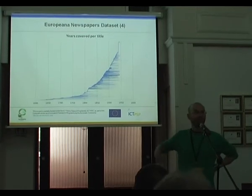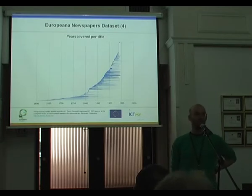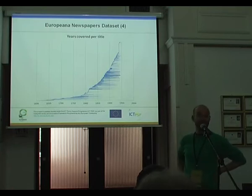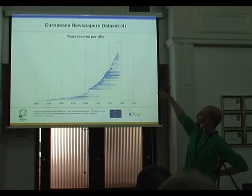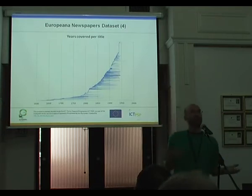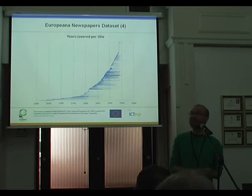This visualization shows the timeframes covered by the newspaper collections we're going to process across all partners. The earliest content is from the Dutch National Library, from 1618, and in some cases we go up into the second half of the 20th century — some libraries have content up to 2000 where they have agreements with publishers. Overall, it's a broad spread, with naturally the most content available in the 18th and 19th centuries.